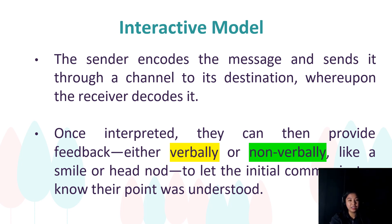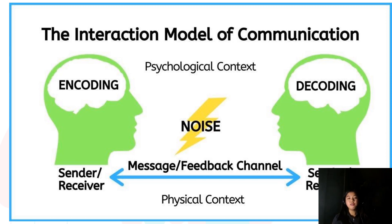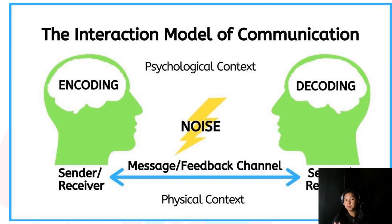Take a look at this diagram of the interaction model of communication. You'll see that we have sender, receiver, sender, receiver — meaning simultaneous. They have the chance to become the sender and at the same time the receiver. There are still noise or barriers such as psychological context and physical context. And of course, you have to select a specific channel to deliver your message or feedback.